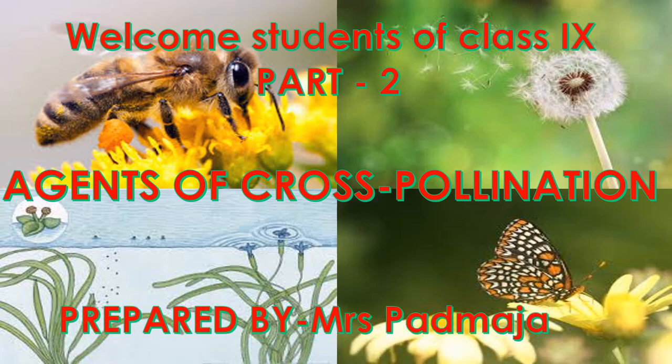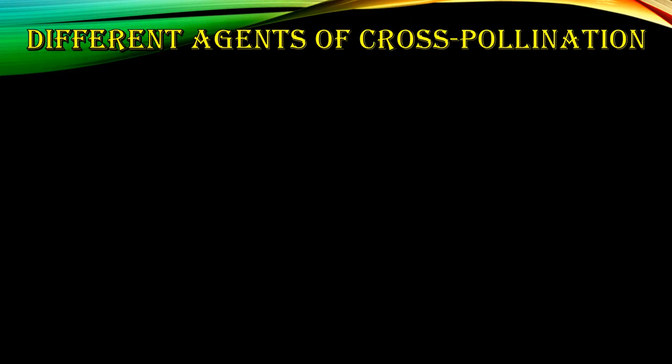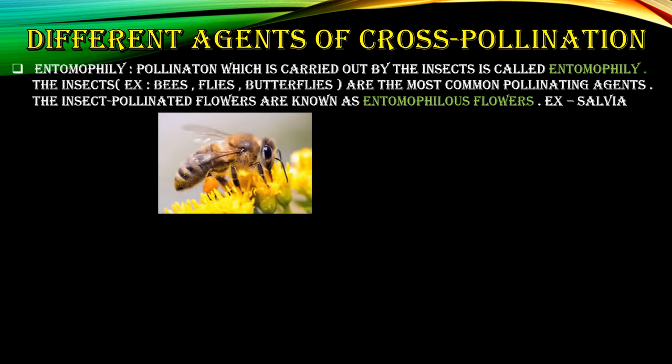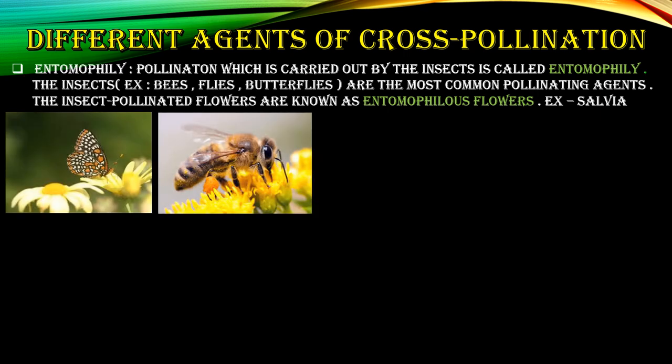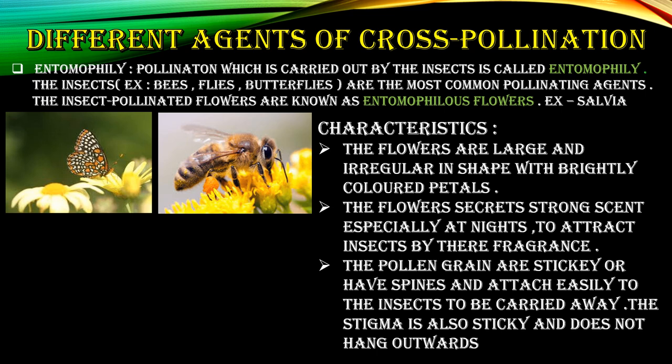This is the continuation of pollination and fertilization. We have already completed what is pollination, self and cross-pollination. Now we are going to read the agents of cross-pollination. There are different agents of cross-pollination as you can see in the picture.